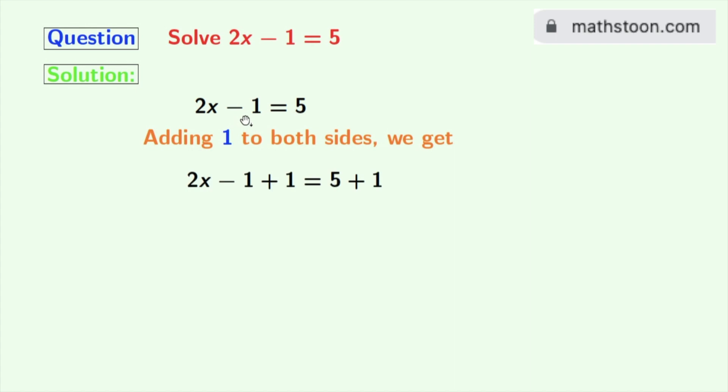By doing so we will get 2x minus 1 plus 1 is equal to 5 plus 1. As minus 1 plus 1 is 0 so we get 2x in the left hand side and in the right hand side 5 plus 1 is 6. So we get 2x is equal to 6.